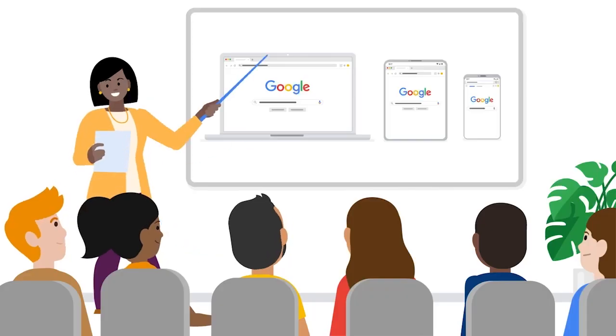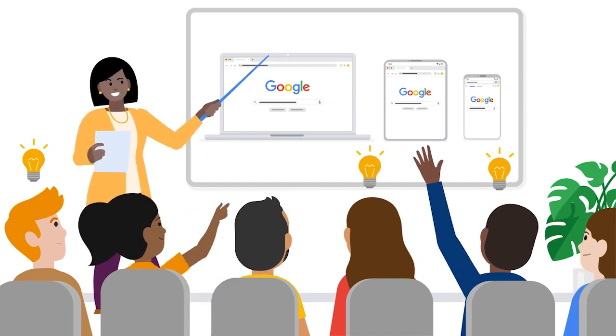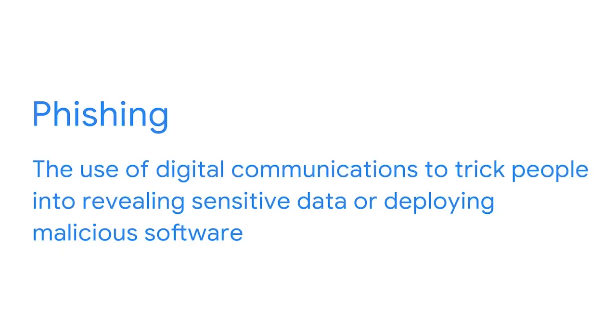As a security professional, your role is to identify and manage inappropriate use of technology that may place your organization and all the people associated with it at risk. One way to safeguard your organization is to conduct regular internal trainings, which you as a future security analyst may be asked to lead or participate in. Today, it's common for employees to receive training on how to identify social engineering attacks, specifically phishing through the emails they receive. Phishing is the use of digital communications to trick people into revealing sensitive data or deploying malicious software.